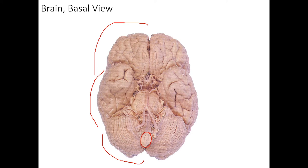Let's focus on the temporal cortex. There is a sulcus on this inferior basal view called the occipitotemporal sulcus because it extends through the occipital and temporal lobes. The next sulcus more medially is the collateral sulcus. Between those two sulci is an important gyrus named the fusiform gyrus, highlighted in yellow. The fusiform gyrus is critical for identifying objects in our visual fields — basically naming objects and understanding objects.